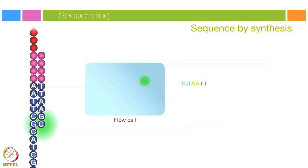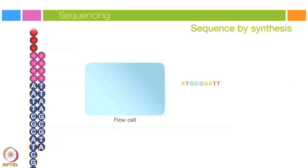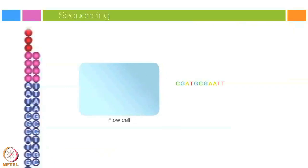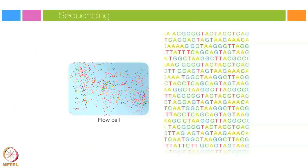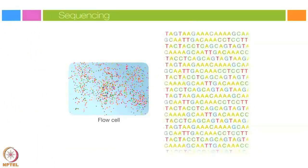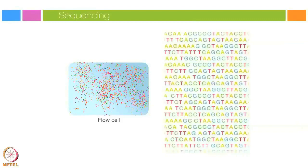The number of cycles determines the length of the read. The emission wavelength, along with the signal intensity, determine the base call. For a given cluster, all identical strands are read simultaneously. Hundreds of millions of clusters are sequenced in a massively parallel process. This image represents a small fraction of the flow cell.